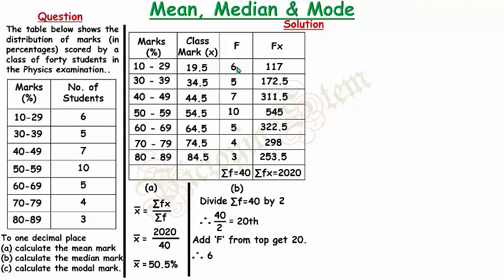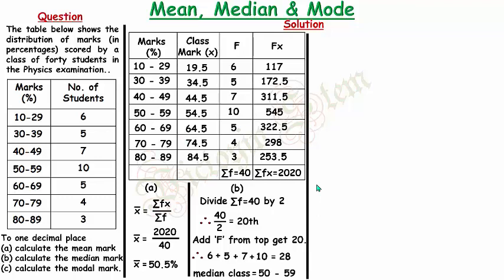Adding frequencies from the top: 6, then 6+5=11, then 11+7=18. I need two more to reach 20, and the next class has a frequency of 10, so 18+10=28. The two values needed to bring 18 up to 20 lie in the class 50 to 59, making it the median class. Verifying from the bottom: 3+4=7, 7+5=12; I need 8 more marks, which come from the 50–59 class — confirming it as the median class.